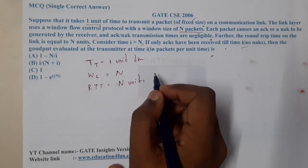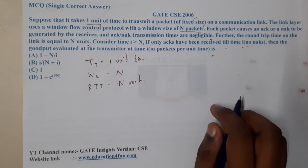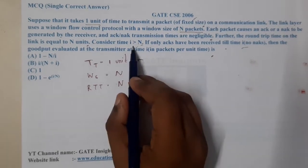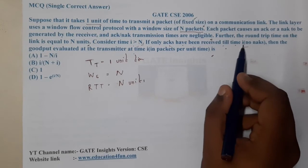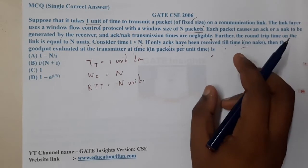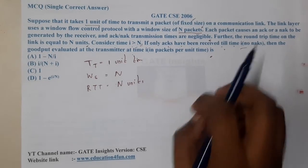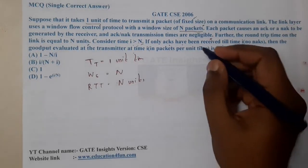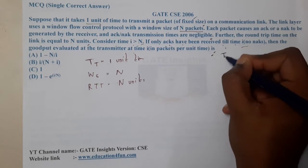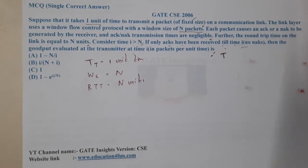They also told us to consider time i greater than N, where only acknowledgements have been received till time i. We will assume some particular time and once that time is out, only one cumulative acknowledgement is sent. At the end, they are asking for the throughput — or goodput as they call it.